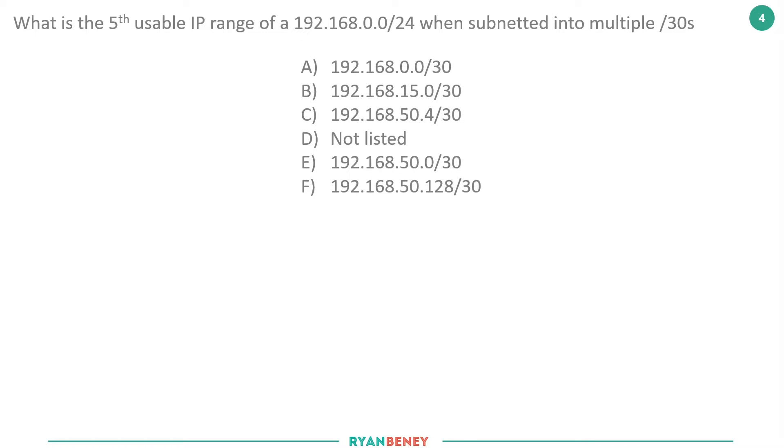This one's going to be a bit more tricky. We've been asked: What is the fifth usable IP range of 192.168.0.0/24 when it's subnetted into multiple /30s? First of all, 192.168.0.0/24 tells us that these bits here—the first 24 bits, which happen to be the first three octets—we don't touch. They all must remain the same.